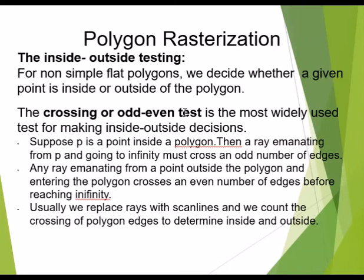The first approach within inside-outside testing is called the crossing or odd-even test. Here again the name has a direct meaning. Suppose we consider a point: if it is to be an inside point of the polygon, then a ray emanating from that particular point going to infinity must cross an odd number of edges of that polygon. If the ray crosses an even number of edges before reaching infinity, then that point must be outside the polygon.